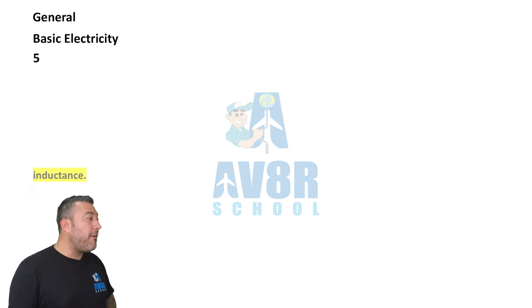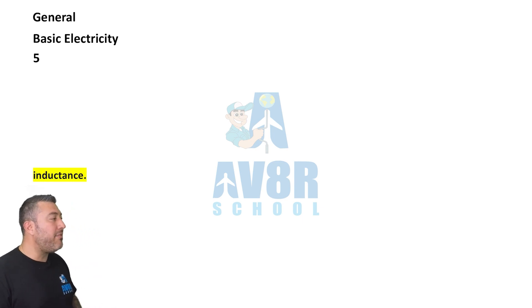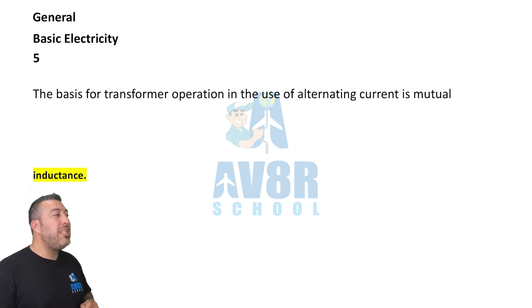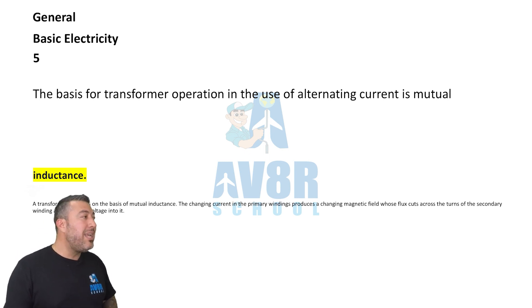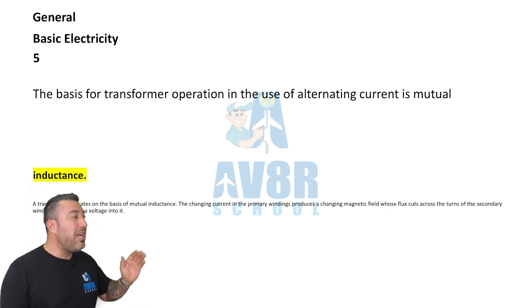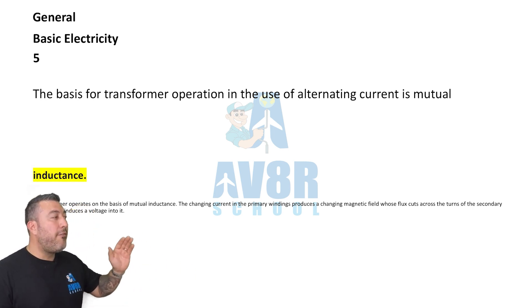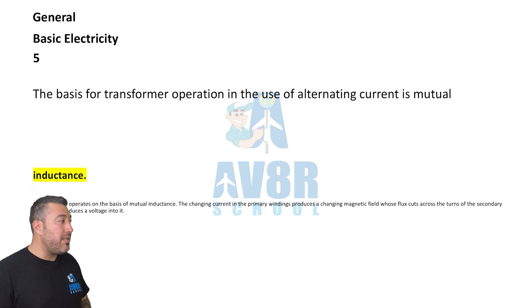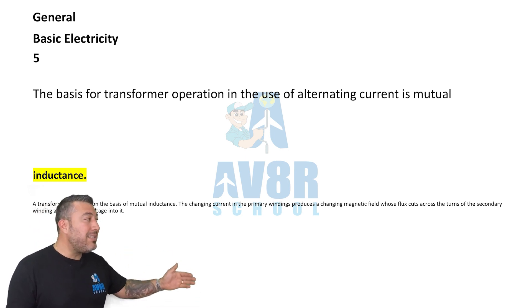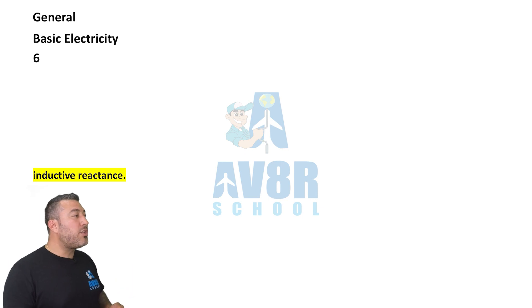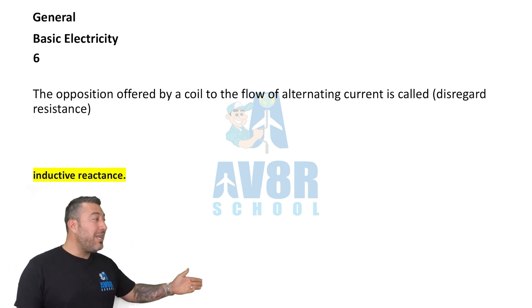Question number five: inductance. The basis for transformer operation in the use of alternating current is mutual inductance.